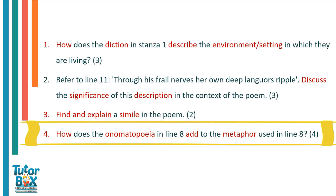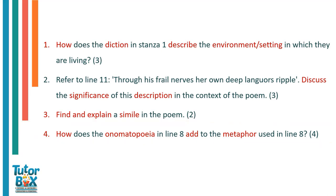The final question: how does the onomatopoeia in line 8 add to the metaphor used in line 8? (4 marks). Line 8 is 'prowl through his hair with sharp electric clicks.' The metaphor is 'prowl,' which describes the mother prowling through the son's hair — it's a metaphor because it refers to the mother as a fierce animal, showing the protective nature of a mother. The onomatopoeia in line 8 is the word 'clicks' — this is a hard and sharp sound, which adds to the metaphor of the fierce animal, because hard and sharp links with fierce, protective animals. It just adds to the metaphor and the imagery of this mother being described as a fierce animal.